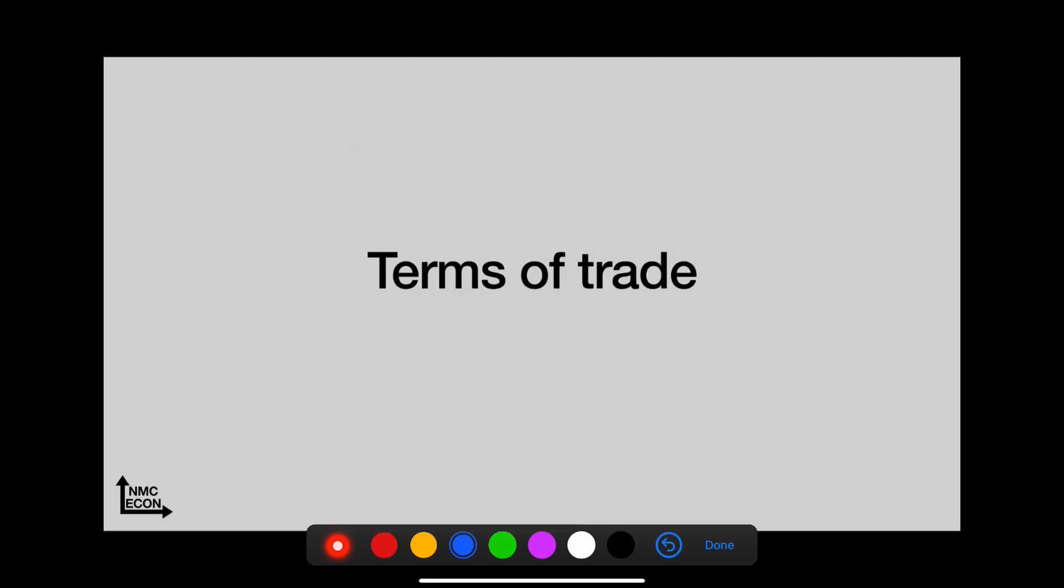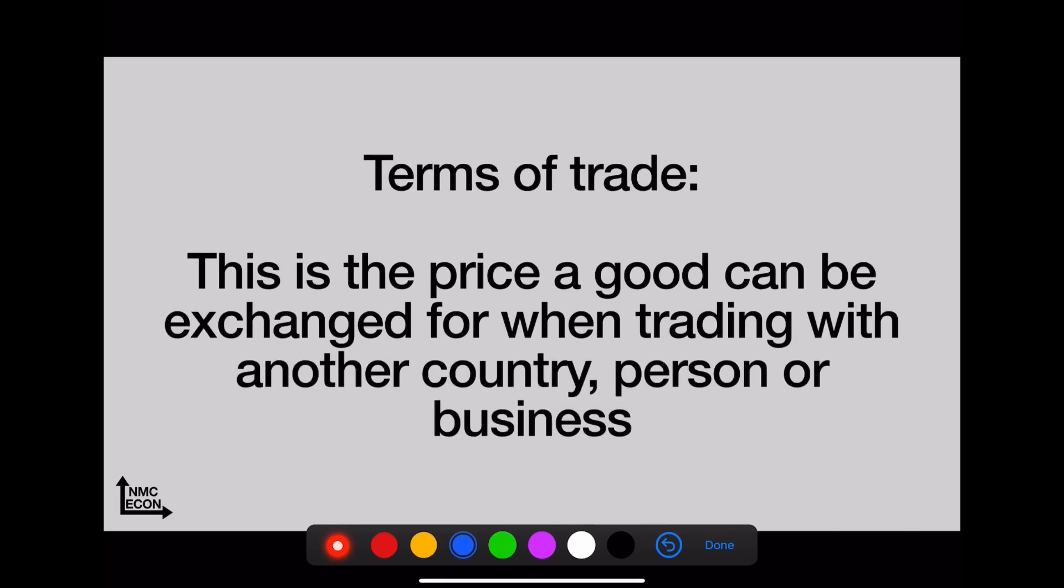Terms of trade—this is the price of a good in terms of how much it can be exchanged for when trading with other countries or people or businesses. The trick here is compare the domestic opportunity cost of one good between two countries. Any number between those two opportunity costs is going to be an acceptable terms of trade.